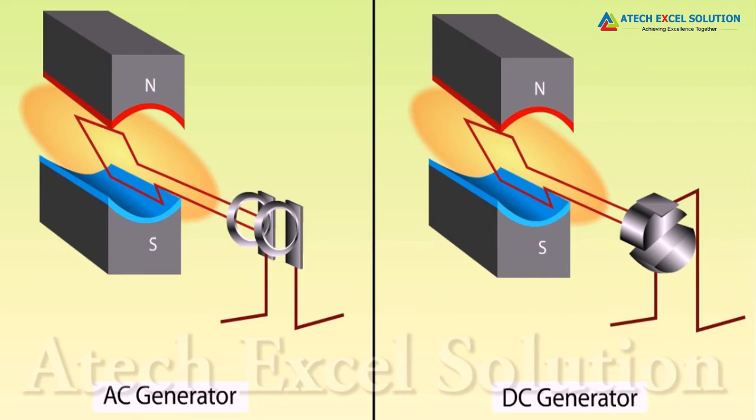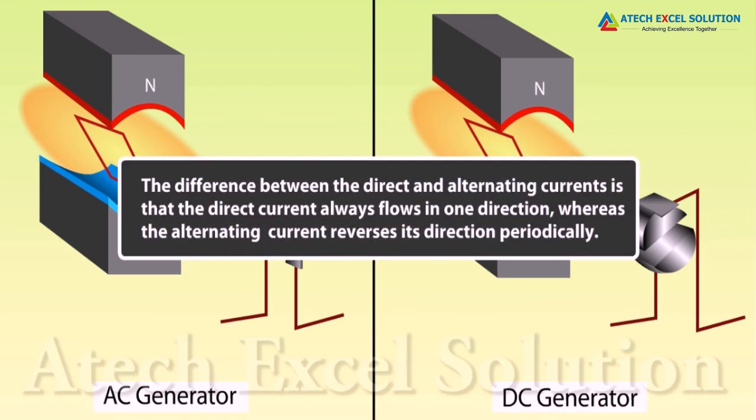Direct current or DC does not change its direction with time. Hence, to get a direct current, a split ring type commutator is used. This device is called a DC generator.